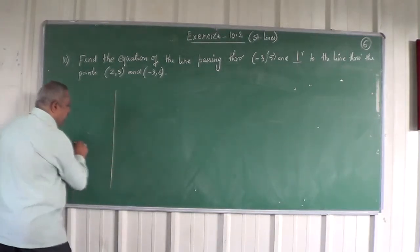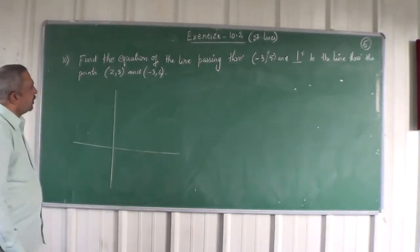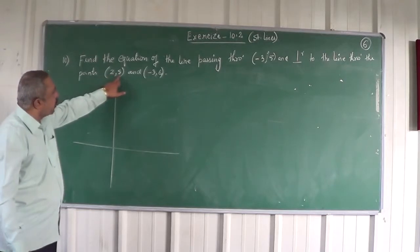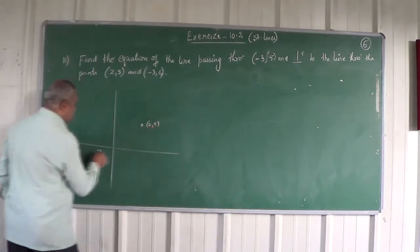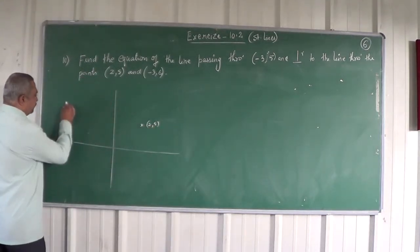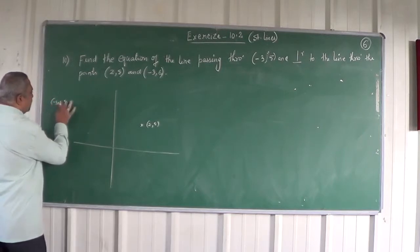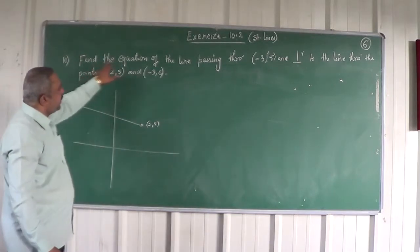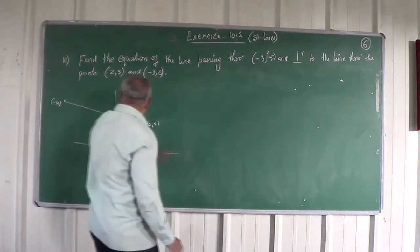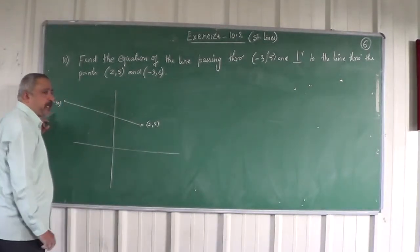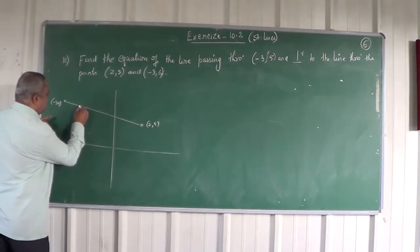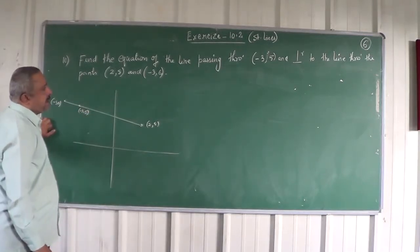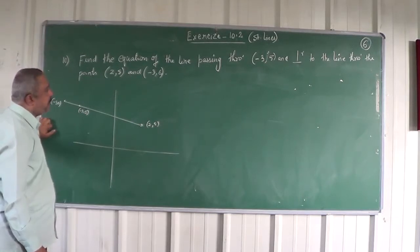If we try to analyze this problem by means of a diagram, let us first draw the points (2, 5) and (-3, 6). Say this is (2, 5) and this is (-3, 6). Now there is a straight line like this. You want to find the equation of the line passing through (-3, 5). So let us say this is (-3, 5). And how is it passing? Passing perpendicular to this line.